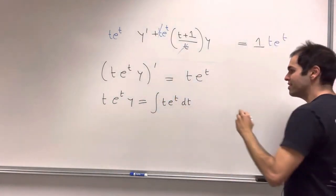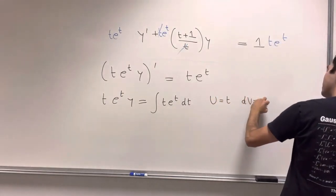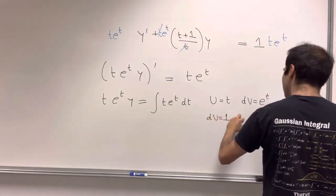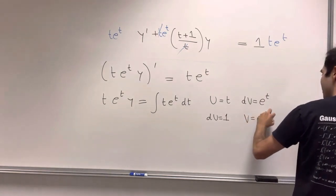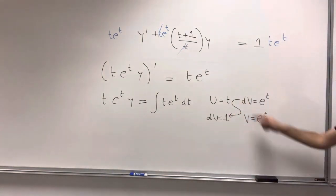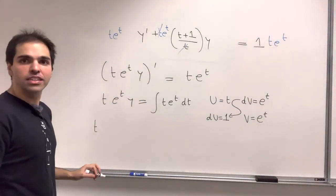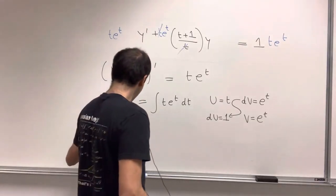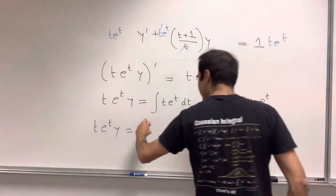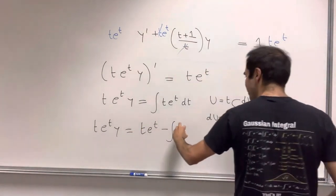This one is a simple integration by parts. So u is t, dv is e^t, du is 1, and then v is e^t. And then you draw a z, like Zorro, and what you end up getting is t*e^t*y equals t*e^t minus integral of 1 times e^t.